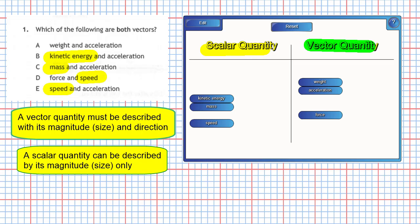Now let's go for the vector quantities. Weight is a vector quantity, and so is acceleration. So there you go, we've got our answer 1A.